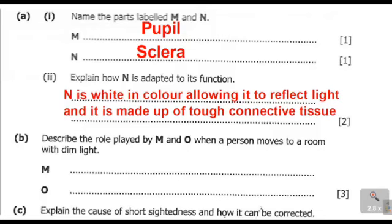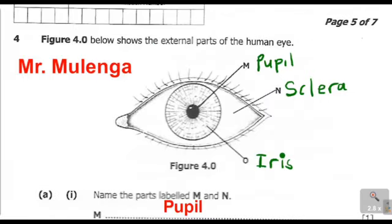We now come to question B right here. Question B reads: describe the role played by M and O when a person moves to a room with dim light. So on question B, they want us to describe the role played by M — which is the pupil — and the role played by O, which is the iris, when a person moves to a room with dim light.